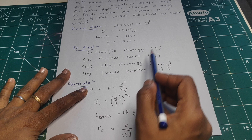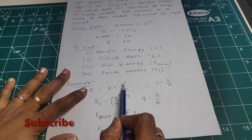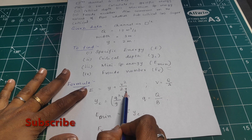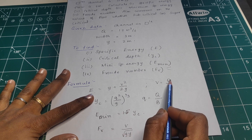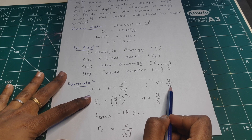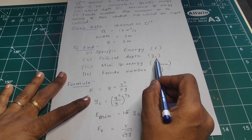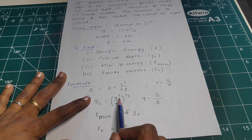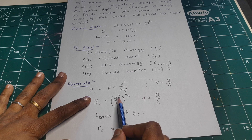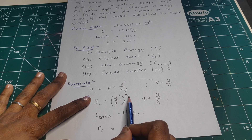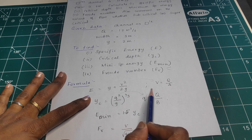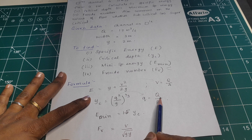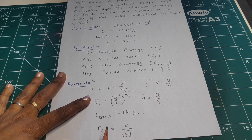The formula for specific energy is E equal to y plus V squared divided by 2g. V is calculated as discharge divided by area. Critical depth formula is: yc equals (q squared divided by g) to the power of 1 by 3. Small q is calculated as capital Q divided by B.